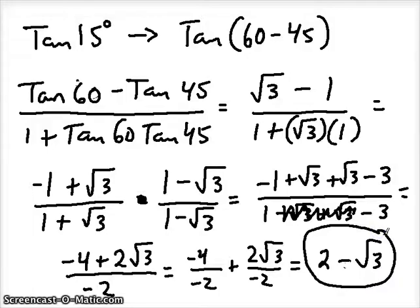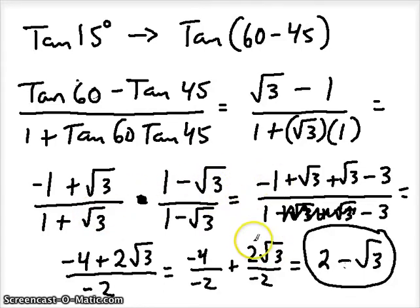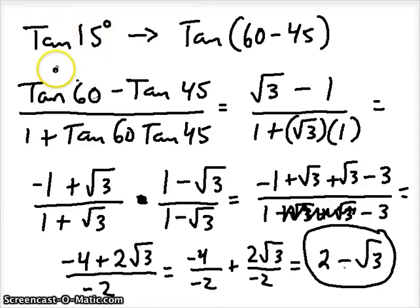Tangent takes a little bit longer to simplify, but as long as you're comfortable with radical and fraction math, you should be able to get there. That's sum and difference formulas using degrees. In the next video I'm going to do the same thing but using radians — it's going to be the same process, so I'll see you in the next video.